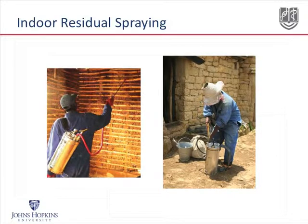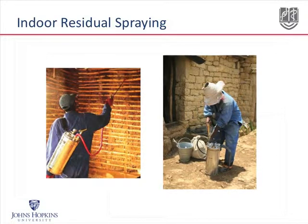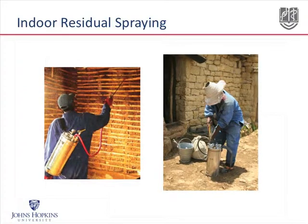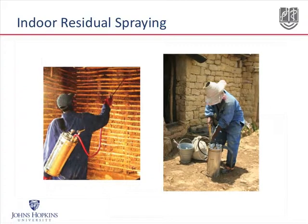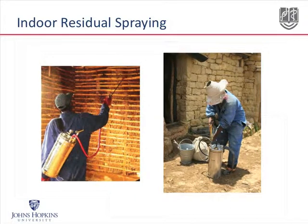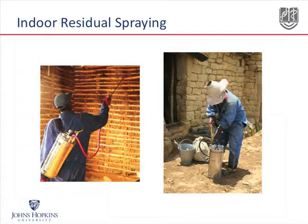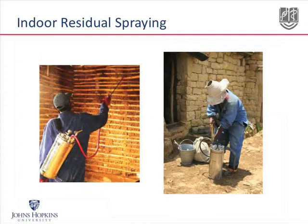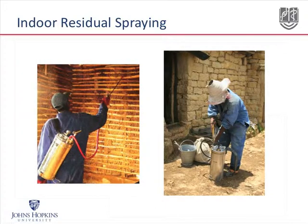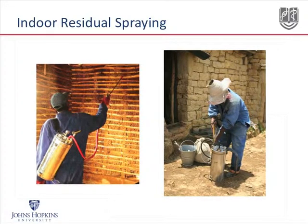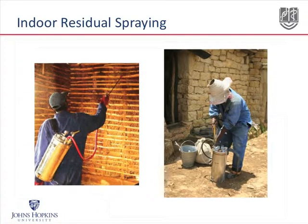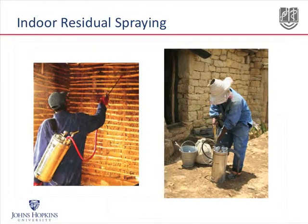In slide six, we can see indoor residual spraying going on. There are many different kinds of houses, and we need to adapt our spraying accordingly. Spraying needs to involve the community and make sure they understand what's happening, because residents have to remove all of their belongings so the walls can be sprayed. This is often done every six months. Initially, this was a major intervention in the malaria eradication effort in the 1950s and 60s, but mosquitoes developed resistance to the chemicals used then. Fortunately, we now have over a dozen different kinds of acceptable insecticides, so countries can rotate these and try to prevent resistance from developing again.